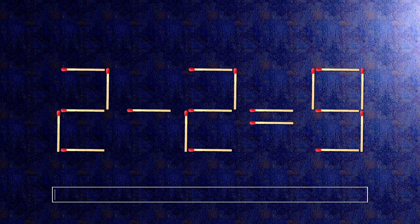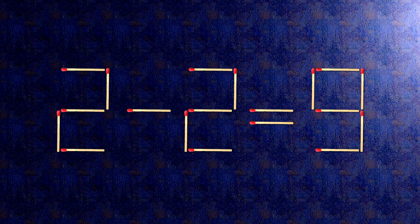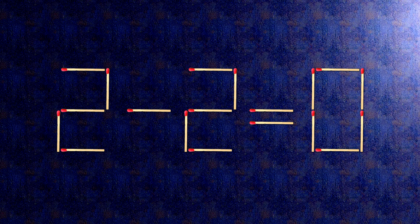How this puzzle is solved: all we need to do is move this match right here. Now, when we check the condition, 2 minus 2 is 0.